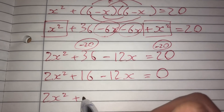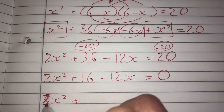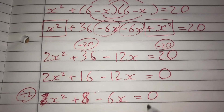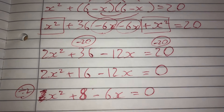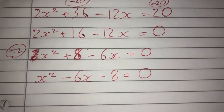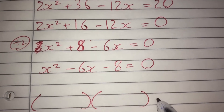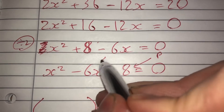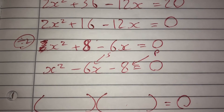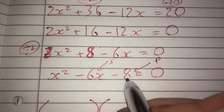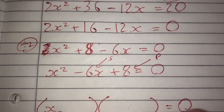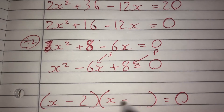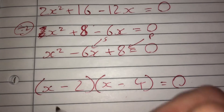I divide the whole equation by 2, giving x squared minus 6x plus 8 equals 0. Rearranging in standard form, this is ready to factorize. The constant term is positive 8, so I need two numbers that multiply to give 8 and add to give minus 6. Two negatives multiplying together give positive 8: minus 2 and minus 4 work, because minus 2 plus minus 4 equals minus 6. So it factorizes as (x minus 2)(x minus 4) equals 0.